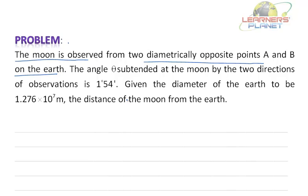The angle theta subtended at the moon by the two directions of observations is 1 degree and 54 minutes. Given the diameter of the earth to be 1.276 × 10^7 m, what is the distance of the moon from the earth?